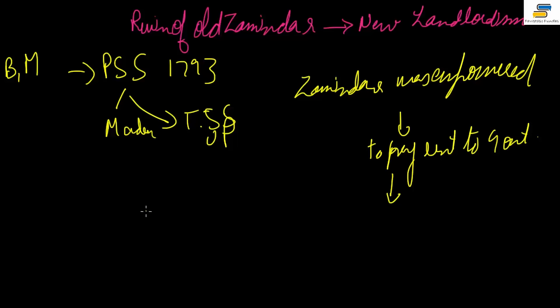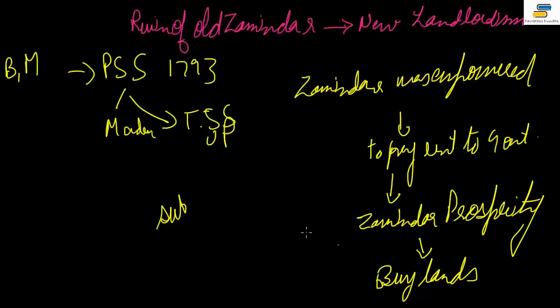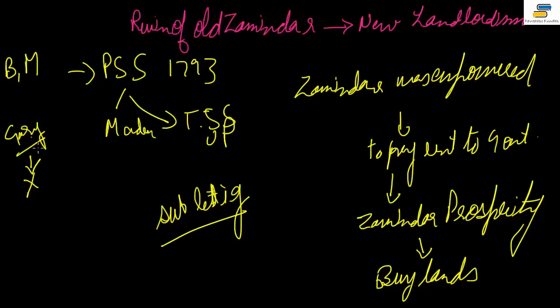The moneyed class, having nowhere else to invest — since there was no industry — began buying more and more land. Then came the problem of subletting: a zamindar owning land would give it to a tenant who pays rent to him, and he passes it to the government. The government had no direct relationship with the cultivating tenant. This subletting was done over 50 times in British India, creating enormous complexity in land relations.